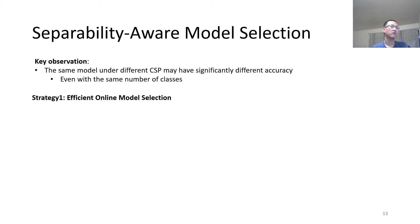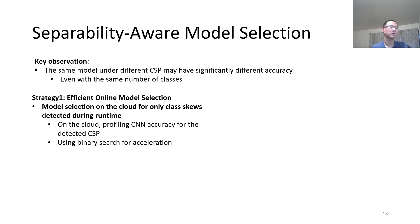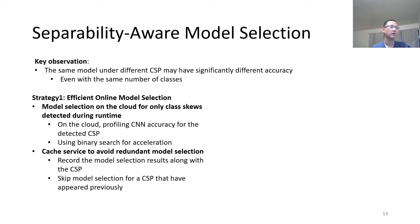In particular, our first strategy is an efficient online model selection. We conduct model selection on the cloud for only class skews detected during runtime. On the cloud, we profile CNN accuracy for the detected class skew profile. Also, we use binary search for acceleration. We also propose a cache service to avoid redundant model selection, since the same CSP may appear repeatedly in the same video.